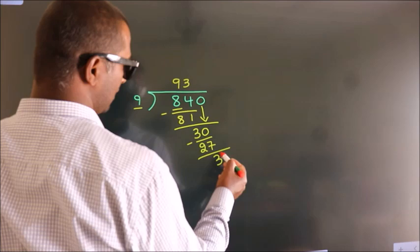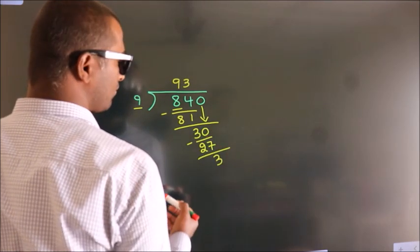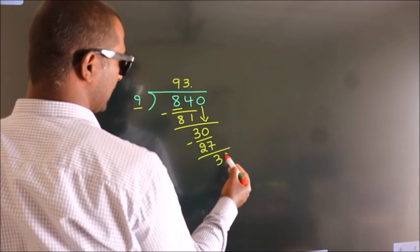After this, there are no more numbers to bring down. So what we do is put a dot and take 0.